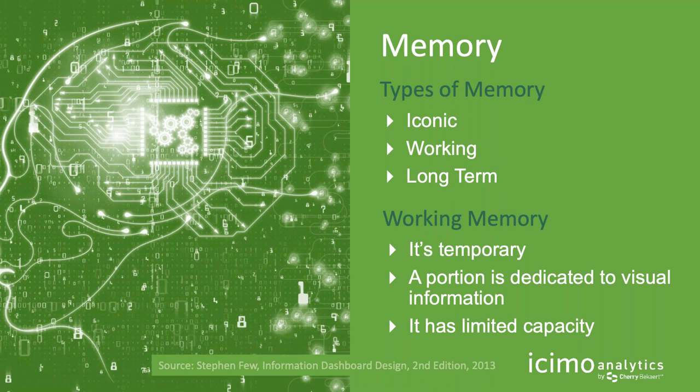To understand this, we need to understand a little bit of how the human brain works — the types of memory. Iconic memory is those things we recognize and relate to immediately — that's why they're called icons on a computer screen. Working memory is what we're processing at any given time. Long-term memory is where we take what's in working memory and store it to use later. Think of it like a computer: long-term memory is the hard drive, working memory is RAM.